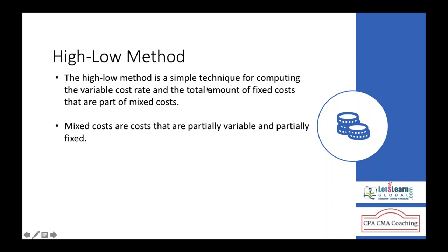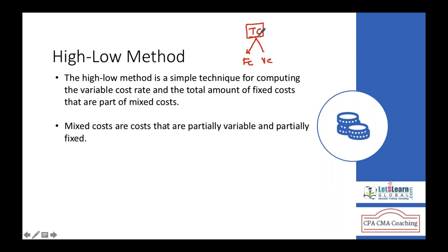We use the high-low method to find out fixed and variable costs from the total cost. We have total cost at an activity level, from which we should be able to find the fixed cost and variable cost. When the total cost is made up of both fixed and variable cost, it is nothing but mixed cost.